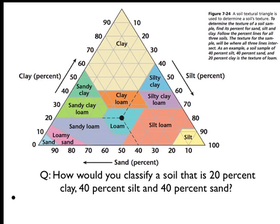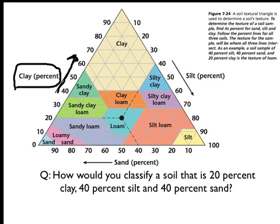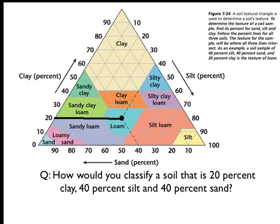So, using my pen here, what you do is you start on this side where the clay is. You can see that clay increases as we're going up the scale in this direction — there's the arrow. So, it's looking for 20% clay, so we draw our line right here and go directly away from that 20 towards this spot here.